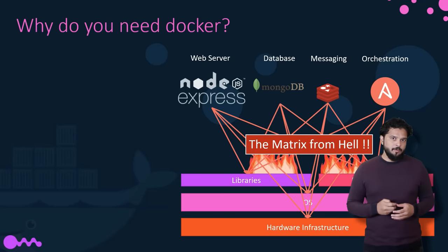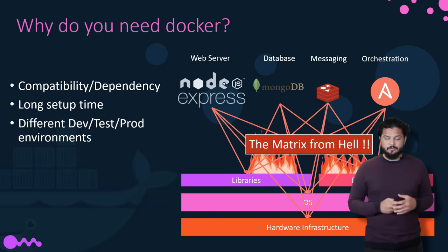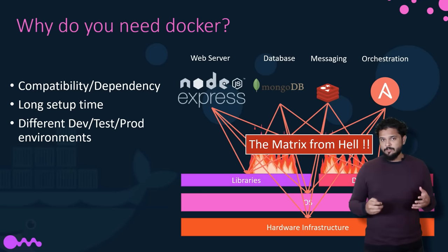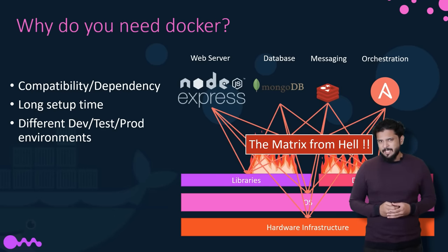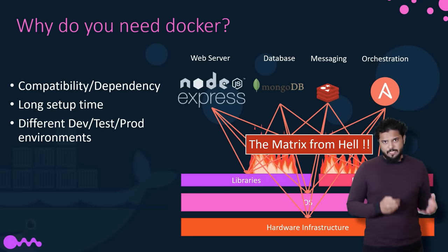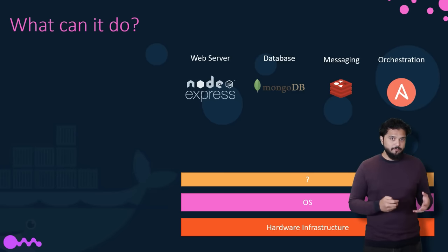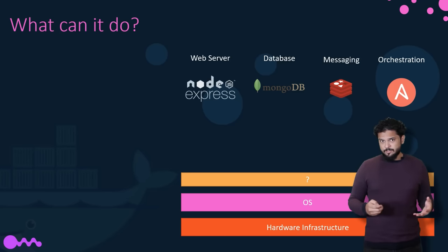Every time we had a new developer on board, we found it really difficult to set up a new environment. The new developers had to follow a large set of instructions and run hundreds of commands to finally set up their environments. We had to make sure they were using the right operating system, the right versions of each of these components. We also had different development, test and production environments — one developer may be comfortable using one OS and the others another. So we couldn't guarantee that the application would run the same way in different environments. So I needed something that could help us with the compatibility issue, and that search landed me on Docker.